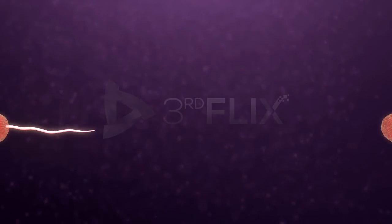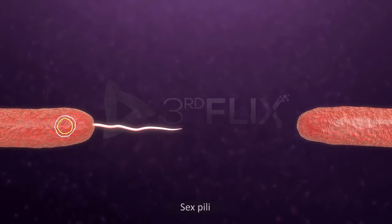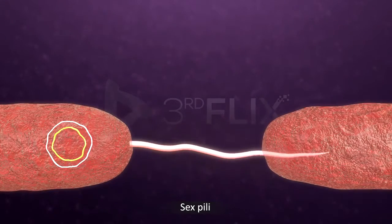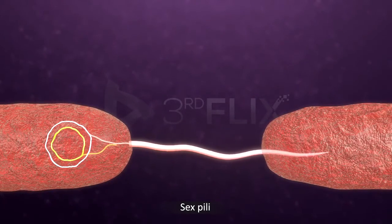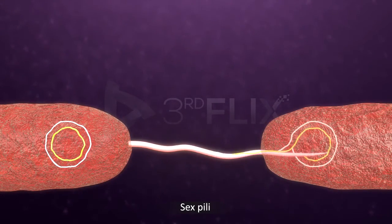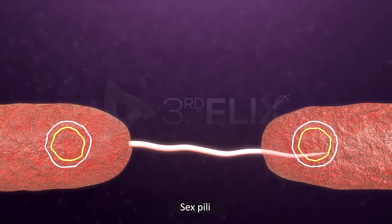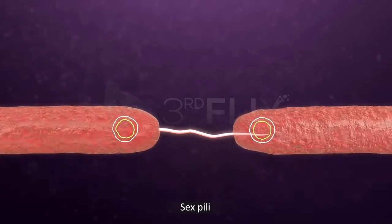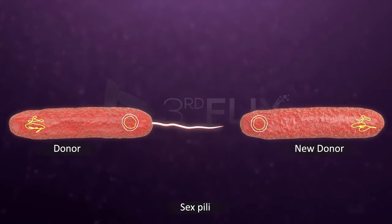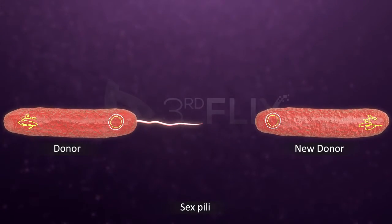In E. coli, sex pili are present. They help in the transfer of genetic material from one bacterium to another, forming a conjugation tube during sexual reproduction.